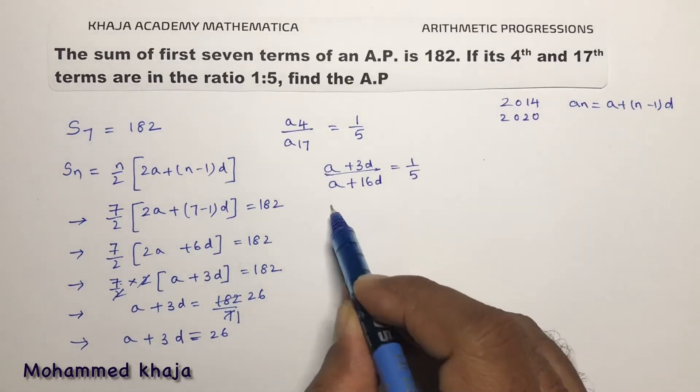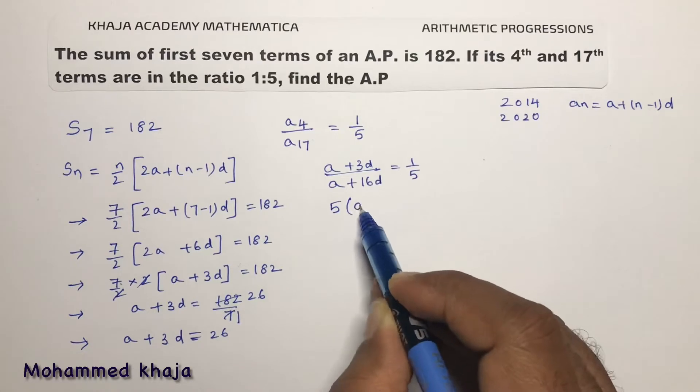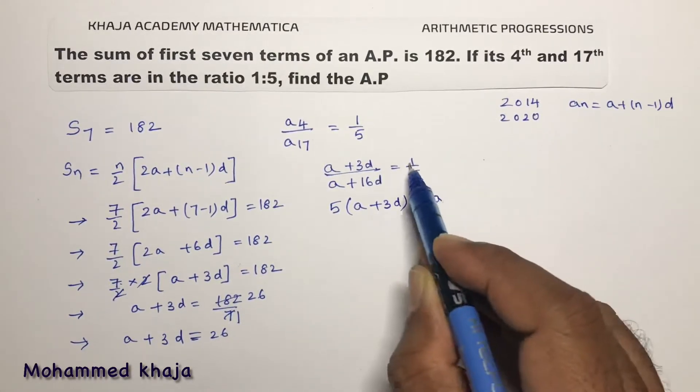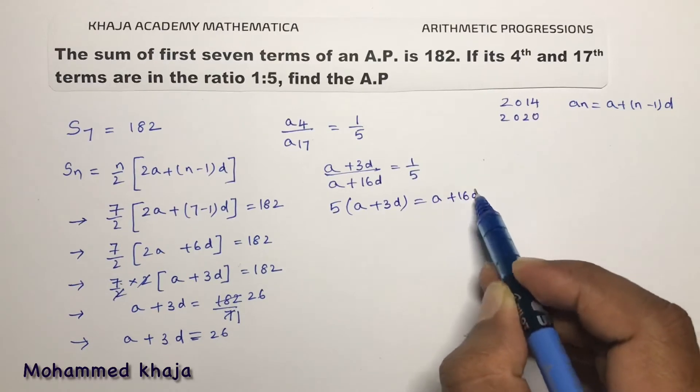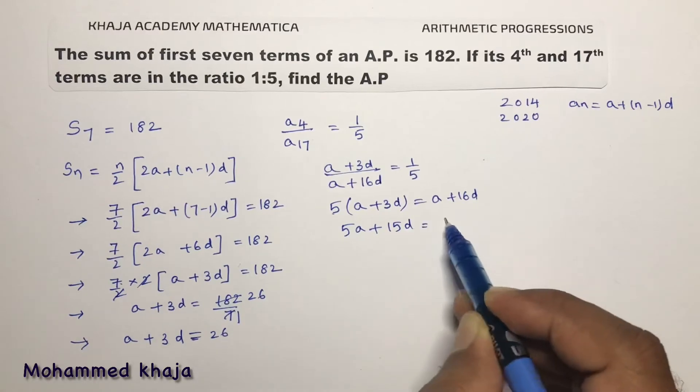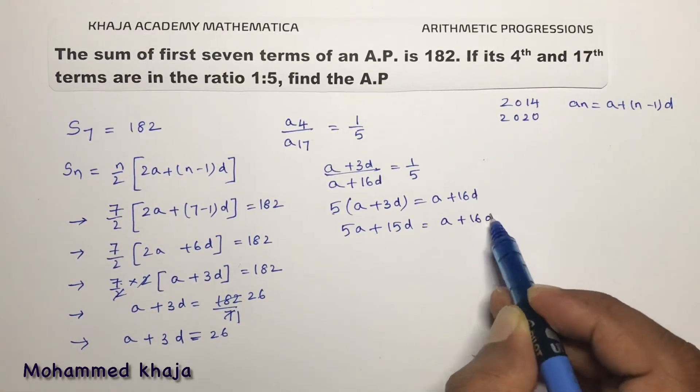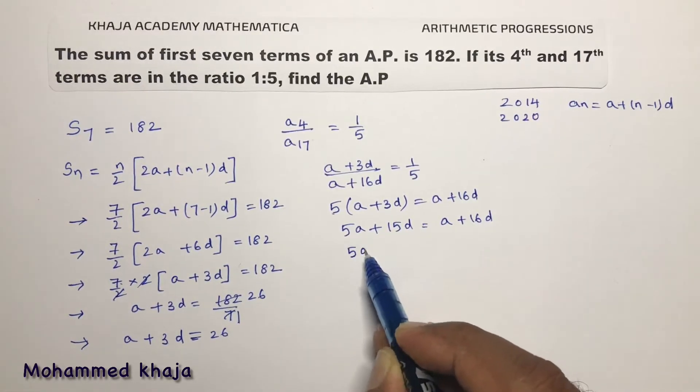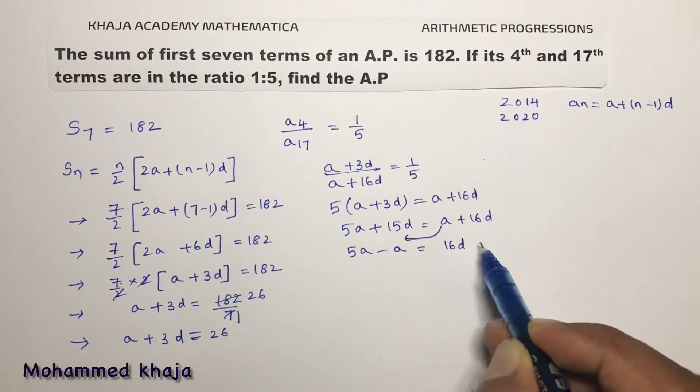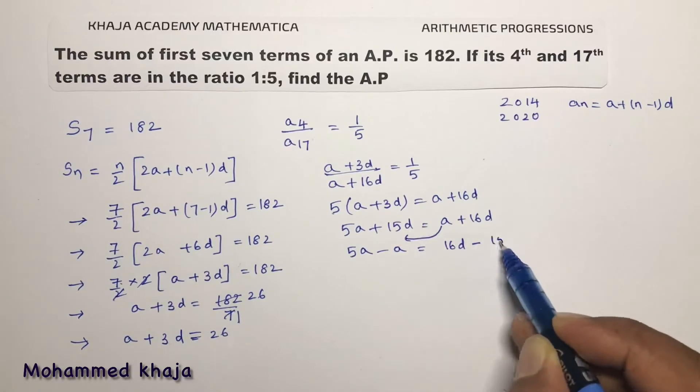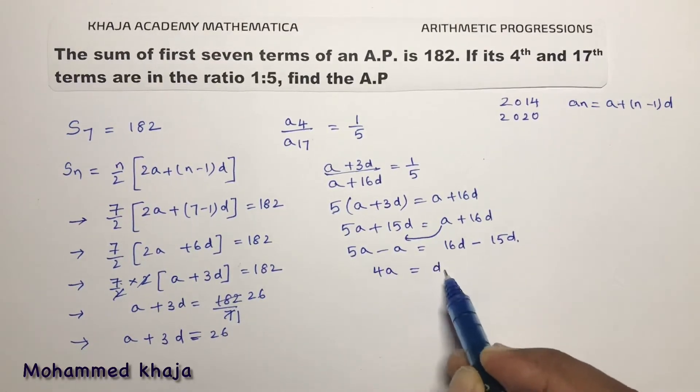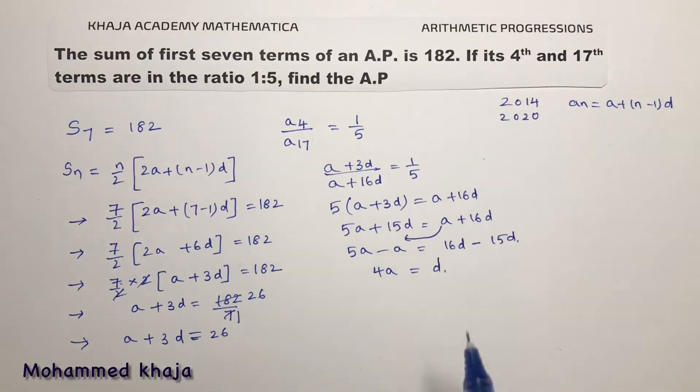Now if I cross multiply, 5 times A plus 3D equals 1 times A plus 16D. 5A plus 15D equals A plus 16D. 5A minus A, 16D minus 15D. 4A equals D.